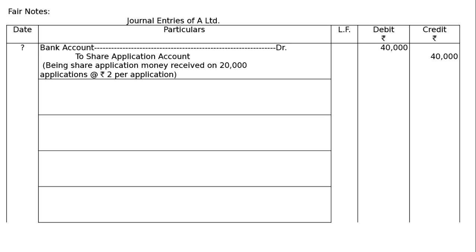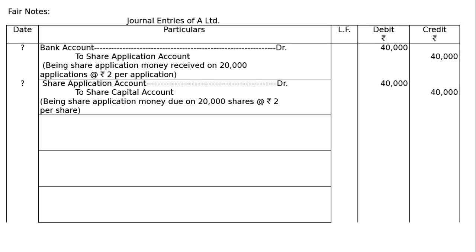Narration: being share application money received on 20,000 applications at the rate of Rs. 2 per application. That is the application received entry. Next is application due: Share application account debited to share capital account. Being share application money due on 20,000 shares at the rate of Rs. 2 per share, that is Rs. 40,000.